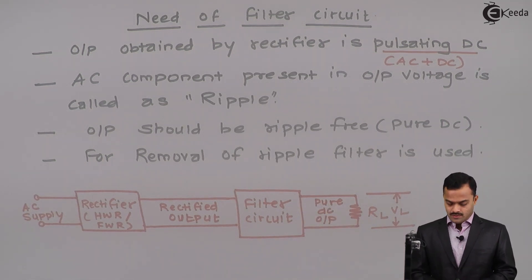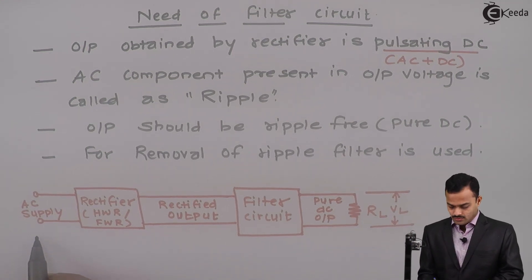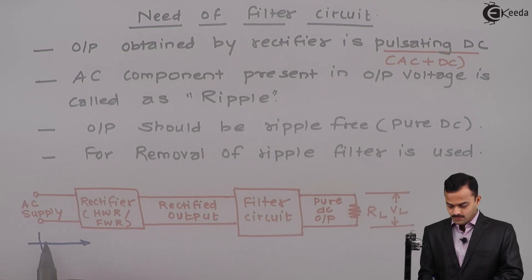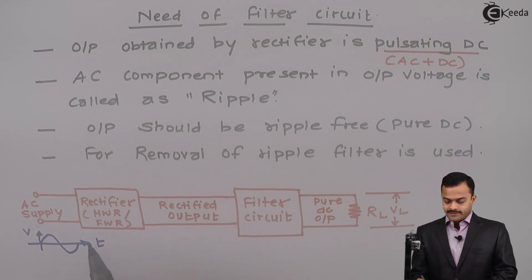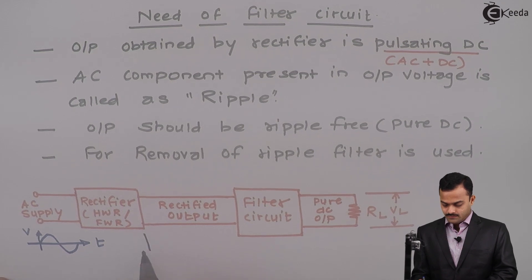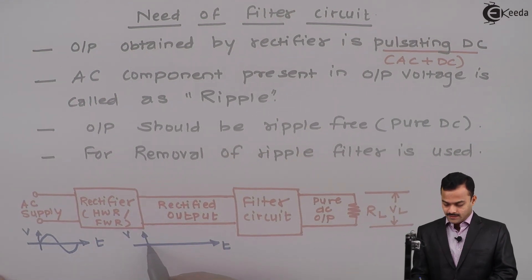Let us draw the waveforms of voltages at various places. First of all, it is AC supply. As you know, it will be a sinusoidal waveform. Then that got rectified by rectifier circuit. And rectifier will give the output voltage of this nature. I will draw it for full wave rectifier. That means it will be like this.